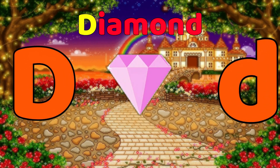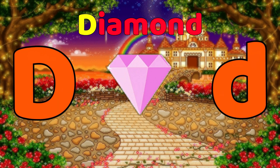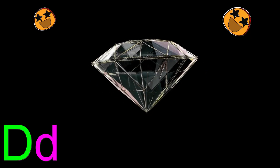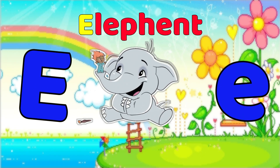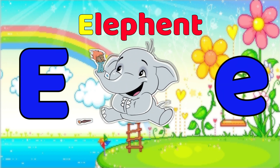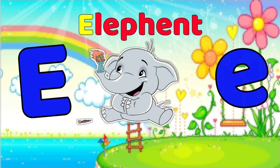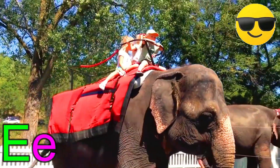D is for Diamond. D, D, Diamond. D, D, Diamond. D, Diamond. E is for Elephant. E, E, Elephant. E, E, Elephant. E, Elephant.